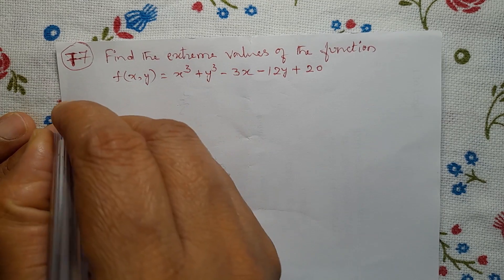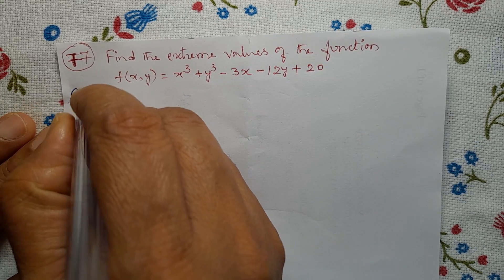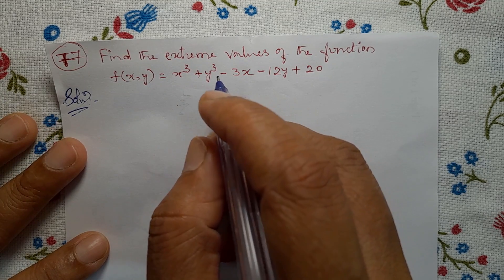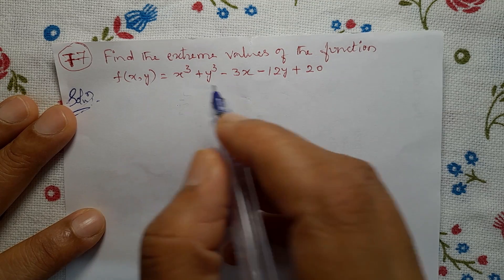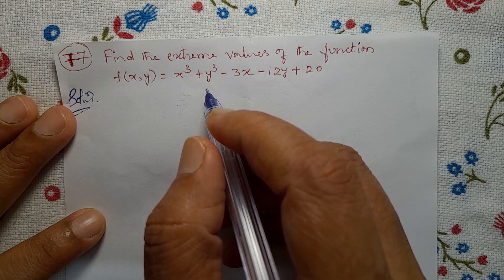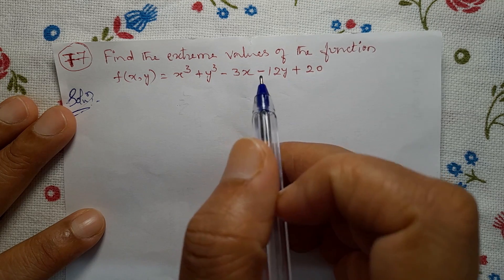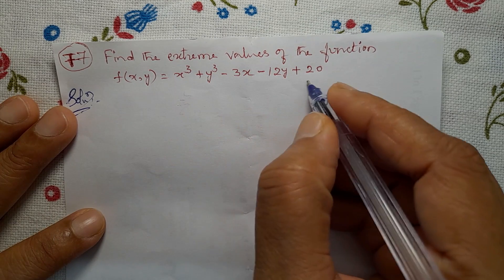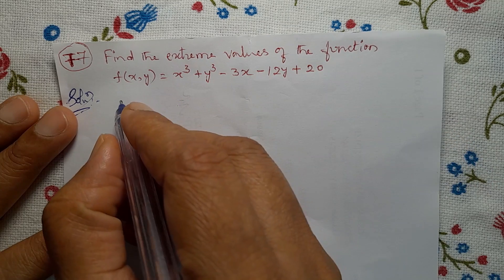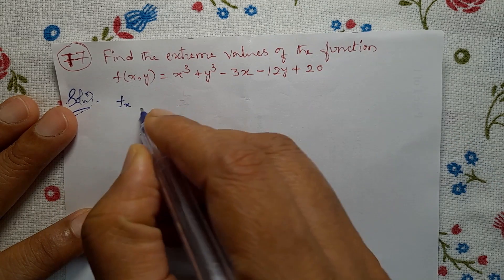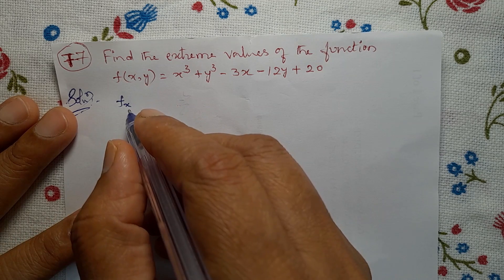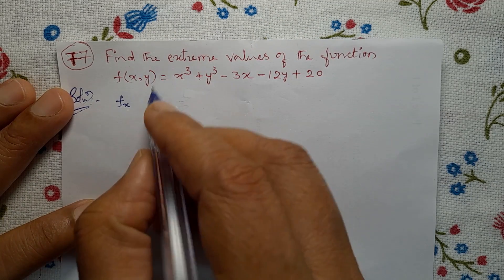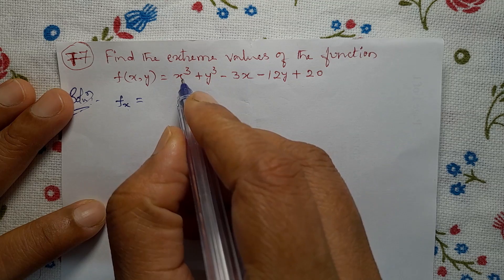We already know the working procedure for solving these problems. First step: find out the stationary points by setting Fx = 0 and Fy = 0. Given f(x,y) = x³ + y³ - 3x - 12y + 20, find Fx, which means the partial derivative of f with respect to x. Here, y is the other variable treated as constant. So Fx = 3x² - 3.